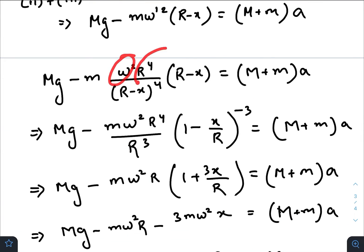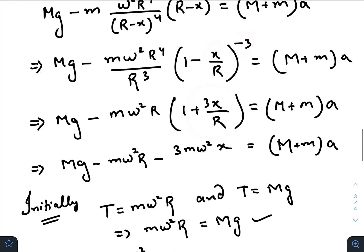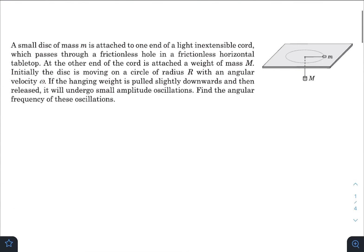So omega squared R to the power 4 by R minus x to the power 4 times R minus x, it makes it 3. Taking r common, so r cubed times 1 minus x by r whole to the power minus 3. As x is small we will do some binomial approximation. Multiplying m omega squared r with these two terms, so we get this one.